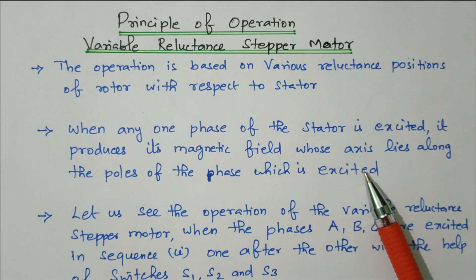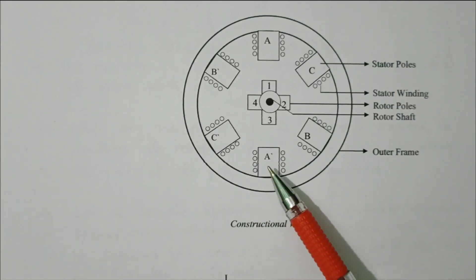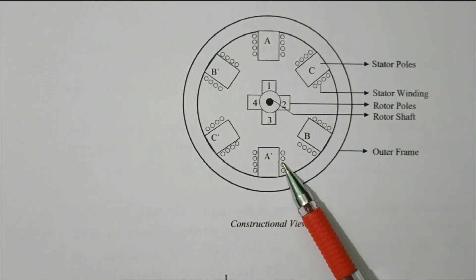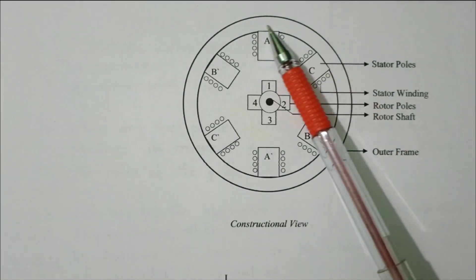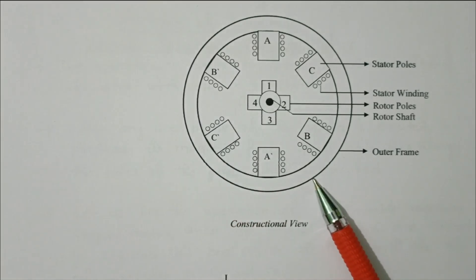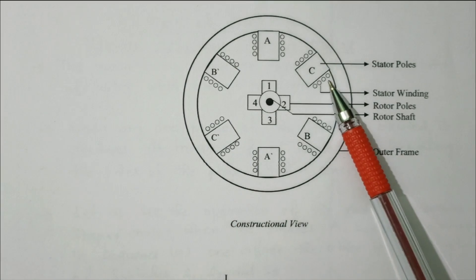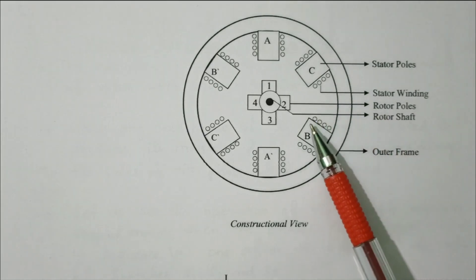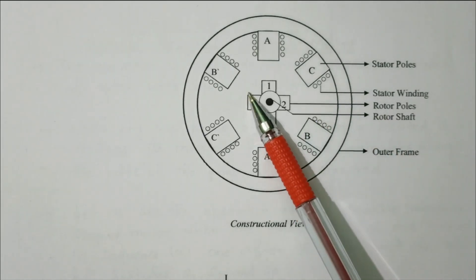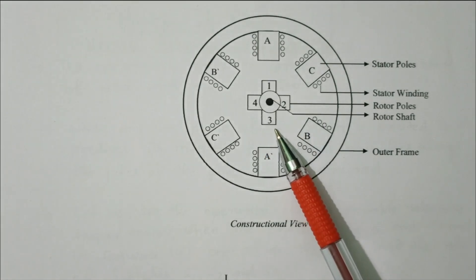Now we will see the cross-sectional diagram so that we are able to understand very easily. This is the constructional view of the variable reluctance stepper motor. The outer frame is there; this is the stator poles. This small circle is called the stator windings. This is the rotor.